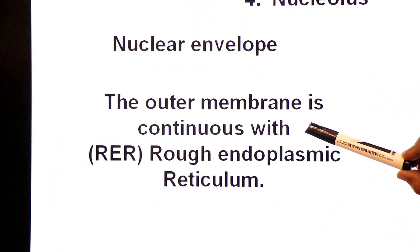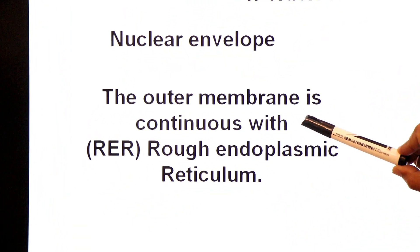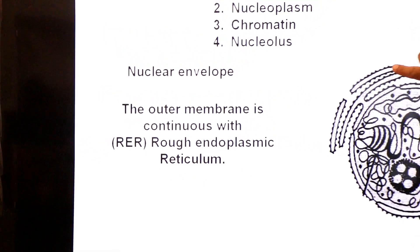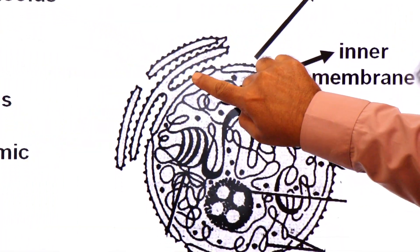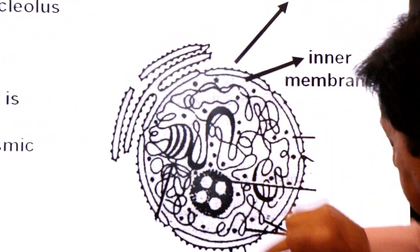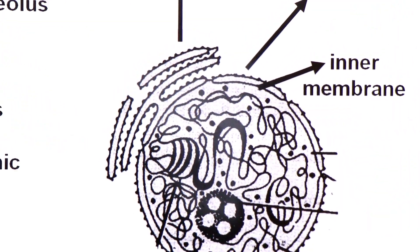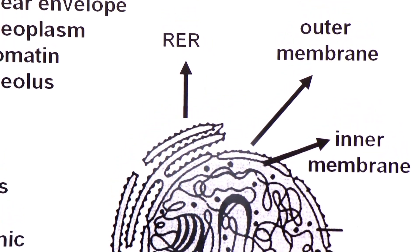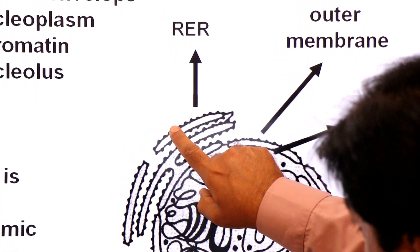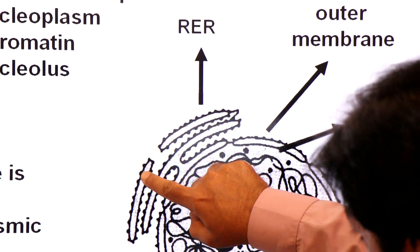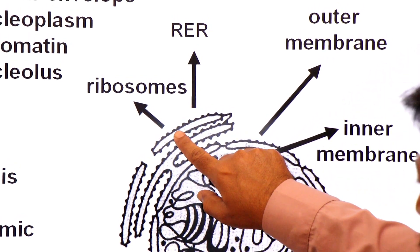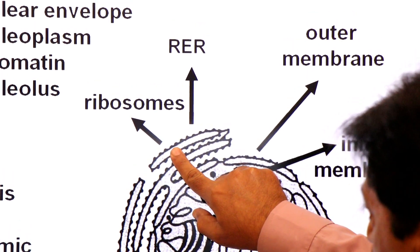The outer nuclear membrane is continuous with the rough endoplasmic reticulum, or RER. The RER is a type of endoplasmic reticulum covered by ribosomes. So the outer nuclear membrane shares a common border with the RER.